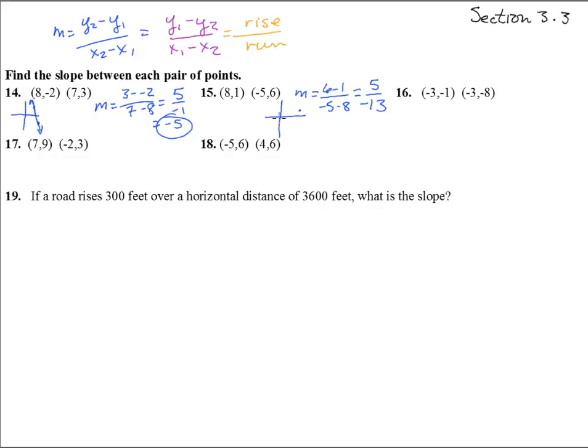So, these should be headed down as well. 8, 1, and negative 5, 6. Probably somewhere up there. Not as steep. You'll notice it's not as big of a number, 5 thirteenths compared to 5. But yeah, same thing.